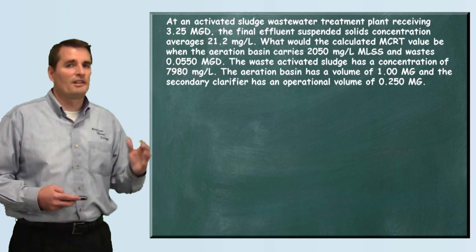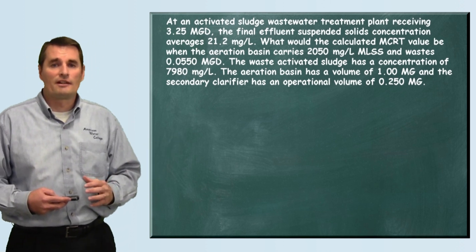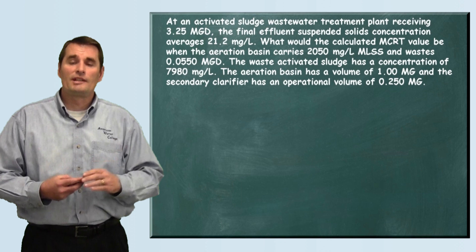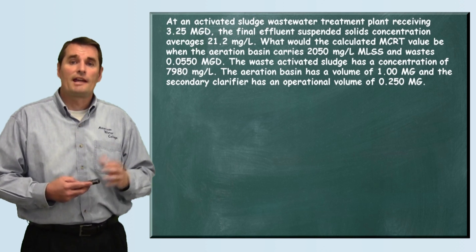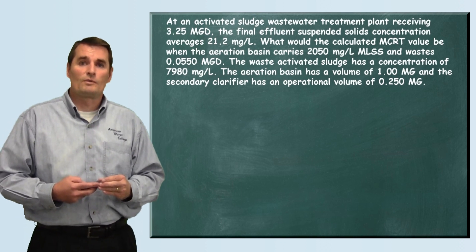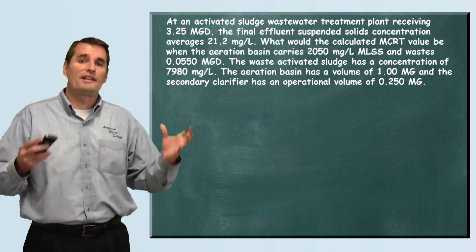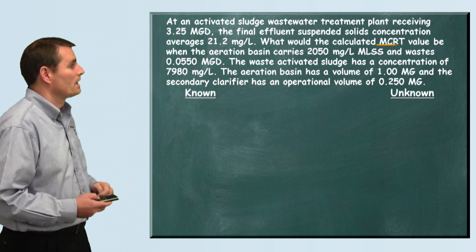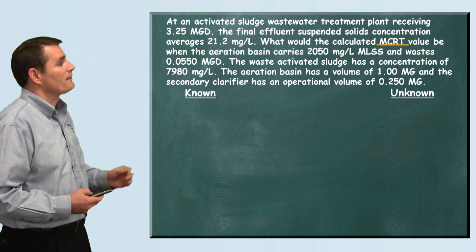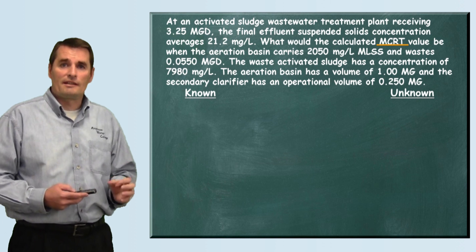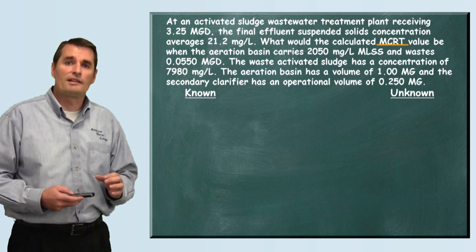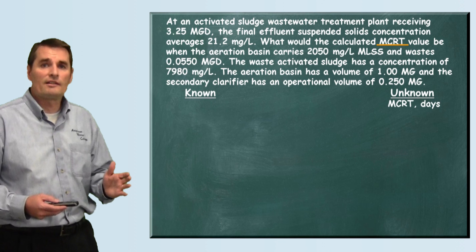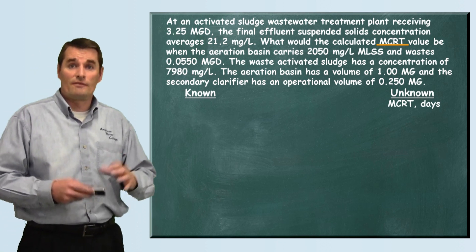There are a lot of numbers and units in there, so to avoid confusion we want to pull those out so we can see them individually. Let's write down our known and unknown information. We are trying to find the MCRT — the mean cell residence time. MCRT has a unit of days.